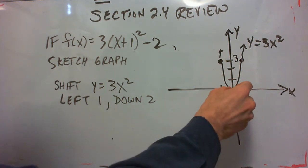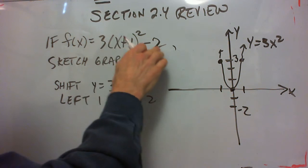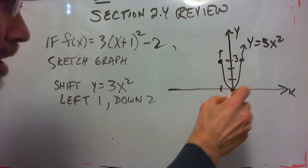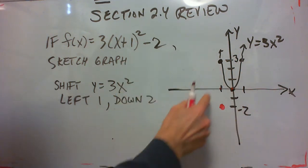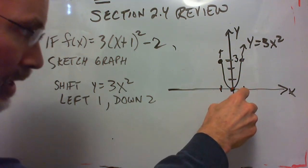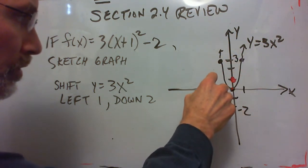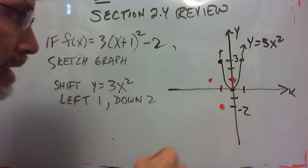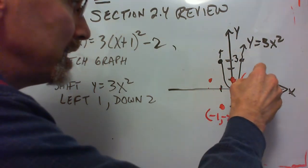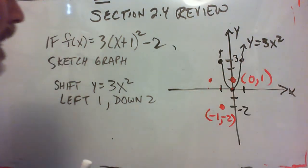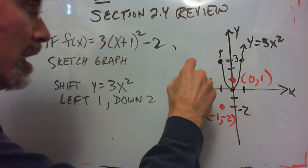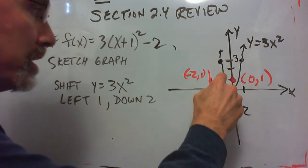Now we shift that graph left 1, down 2. So we'll take that vertex, move it left 1, down 2. And then we graph the 3x squared shape at that new location, which means we go over 1, up 3, over 1, up 3. So we have a vertex at negative 1, negative 2. We have a point at 0, 1 and another point at negative 2, 1. And there's our graph.